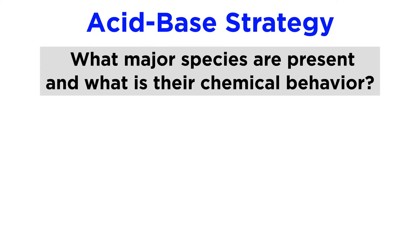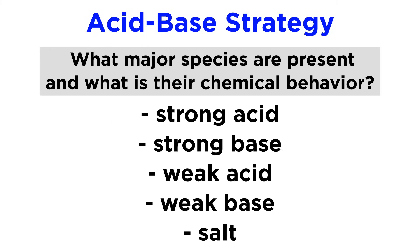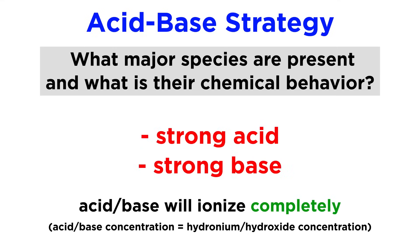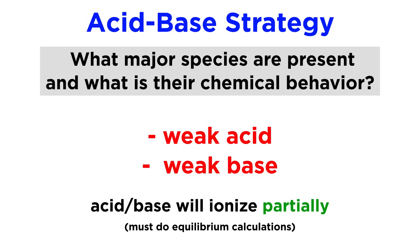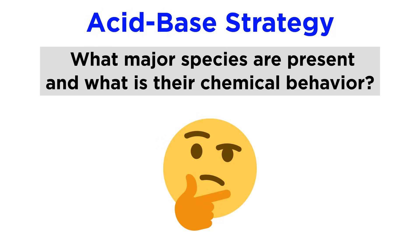Number one: what major species are present and what is their chemical behavior? In other words, do we have a strong acid, strong base, weak acid, weak base, or salt, and how should we expect it to behave? If a strong acid or base, it will completely ionize, producing either hydronium or hydroxide in the same concentration as the acid or base. If a weak acid or base, it will only partially ionize, and we will have to do some equilibrium calculations. This is what is meant by asking whether we can assume that a reaction goes to completion — this is the difference between a strong acid or base and a weak acid or base.